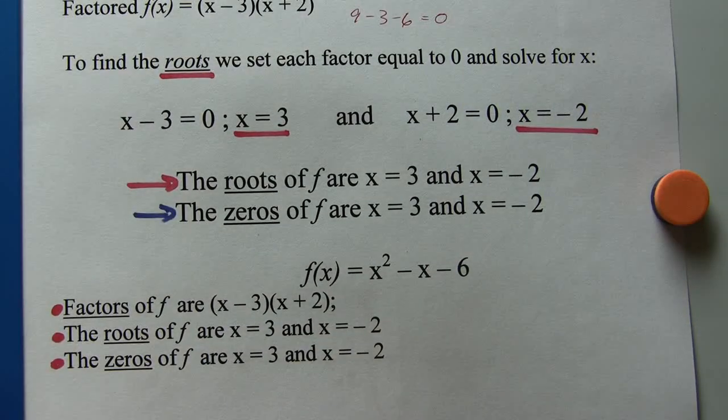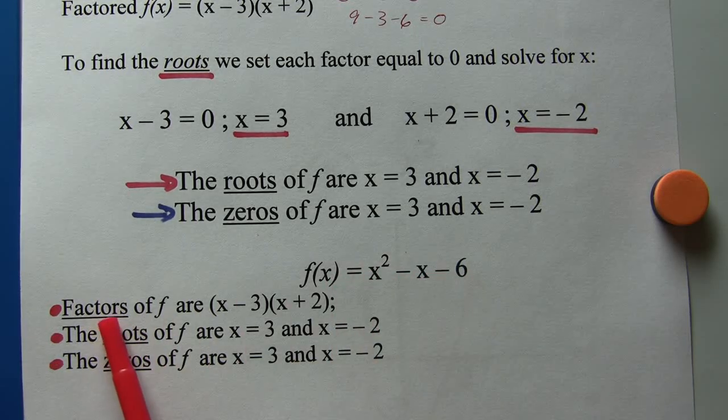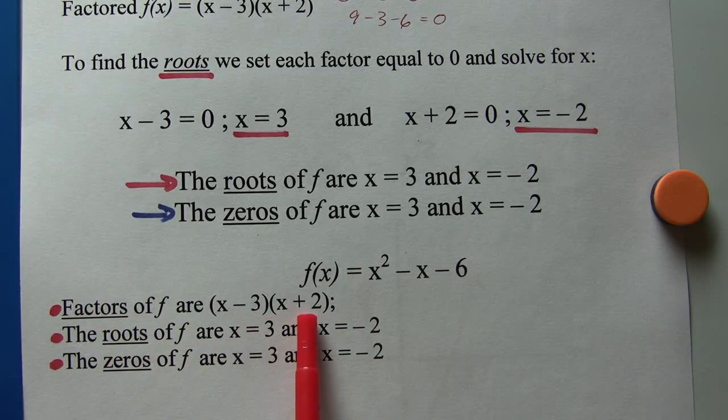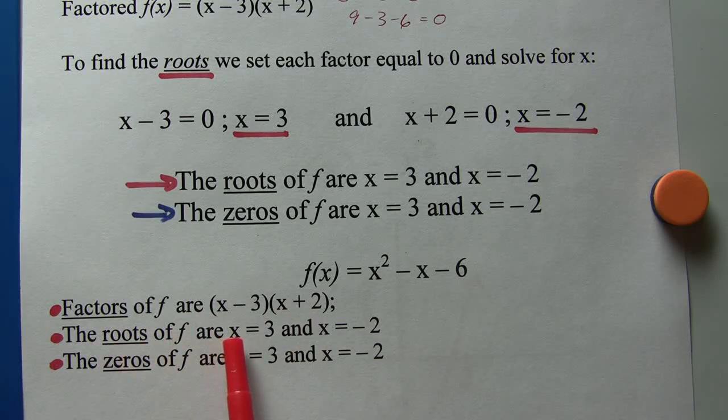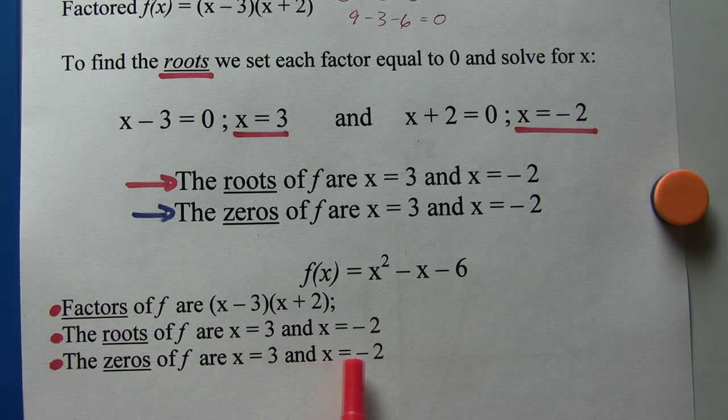So far, we've got this function f of x is x squared and on and on. We've found that the factors of this function are here. The roots are here and here, and the zeros, which is the same thing, are here and here.